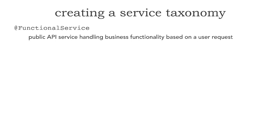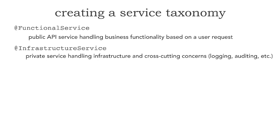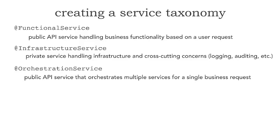Then, an infrastructure service annotation — this is a private service that may or may not go through the API, handling infrastructure cross-cutting concerns. Audit services, logging services, and security services would be categorized here; these are not accessible to the public. The orchestration service is a public API service that orchestrates multiple services for a single business request. For example, 'get all customer data' may require orchestrating 10 independent customer-based microservices, but I don't want to burden any one of them — so the orchestration microservice is single-purpose, fine-grained, and handles just that request.